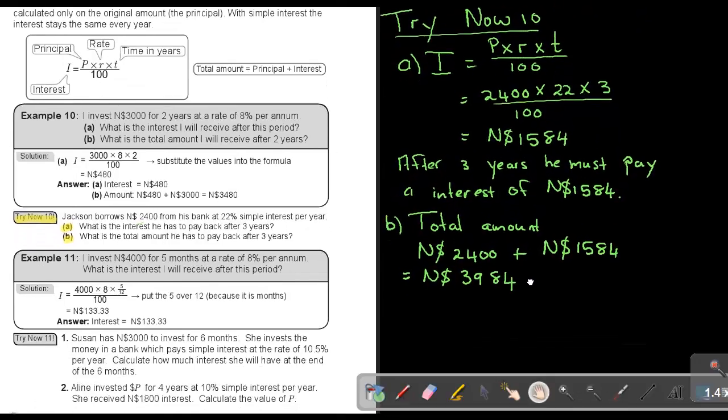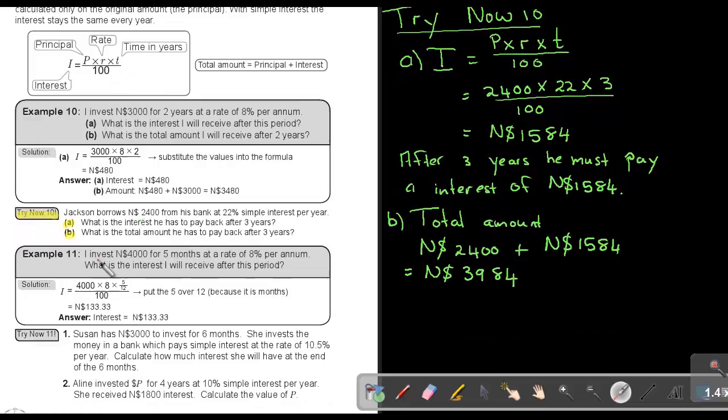Let's look at another example. Now, I invest $4,000 for 5 months, only 5 months of the year. But this is 8% per annum, and per annum means per year. So what is the interest I will receive after this period?